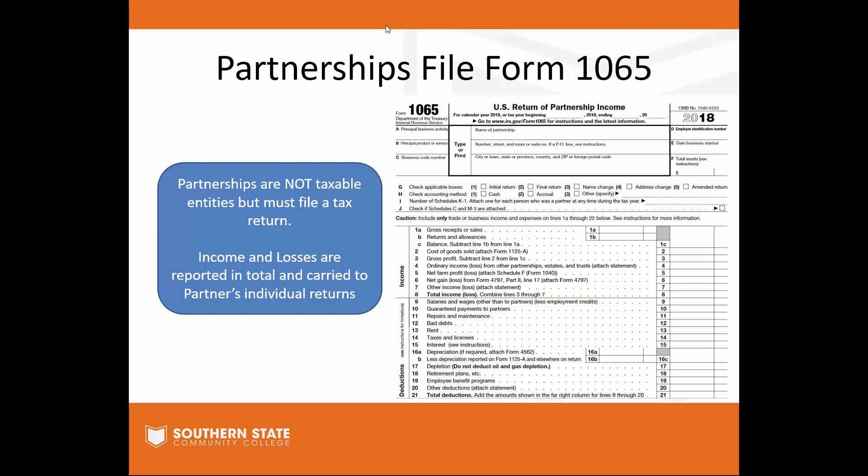In that overview, we'll also talk about partnerships. Partnerships file Form 1065. A partnership is not a taxable entity — they don't pay tax at the partnership level. That return is just an informational return, giving the IRS the total income or loss of the partnership and how it's split among the partners. All that information from the 1065 goes to each individual partner's return according to their share. A form called K-1 shows how income breaks down to individual partners, so the IRS can look for that income on those partners' 1040s.